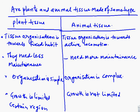The first difference: in plants, tissue organization is adapted for a fixed habitat; in animals, tissue organization is towards active locomotion. Because plants are stationary, they need less maintenance, while locomoting animals need more maintenance. Plant tissue organization is simple; animal tissue organization is complex. In plants, growth is limited to certain regions, while in animals, growth is not limited to a certain region.